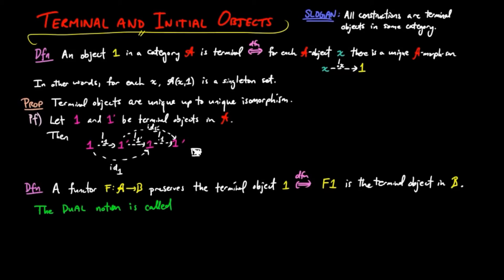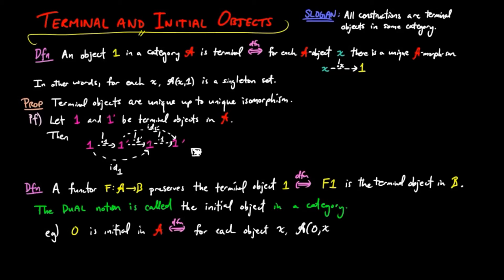Then the dual notion of a terminal object is called the initial object in a category. So 0 is initial in A if and only if, for each object X, the Homset of morphisms from the initial object to X is a singleton set.